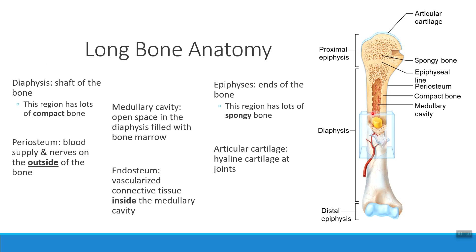One other thing we see on the ends of our long bones is what we call articular cartilage — present on both the distal end and the proximal end. The articular cartilage helps form articulations, which is a fancy word for joints. So the only part of an adult bone made out of cartilage is these two ends. Otherwise, we see a lot of spongy bone in the epiphyses and a lot of compact bone in the diaphysis.